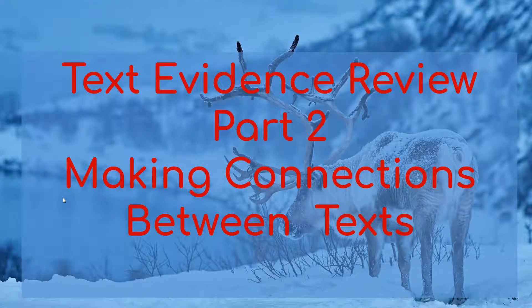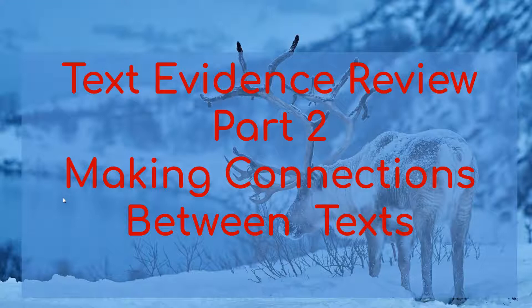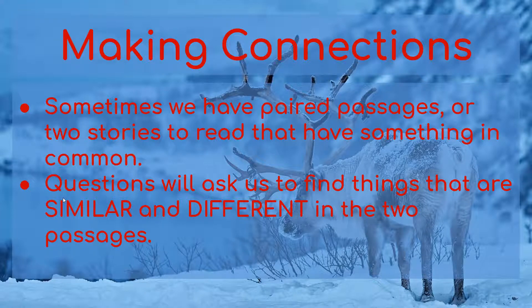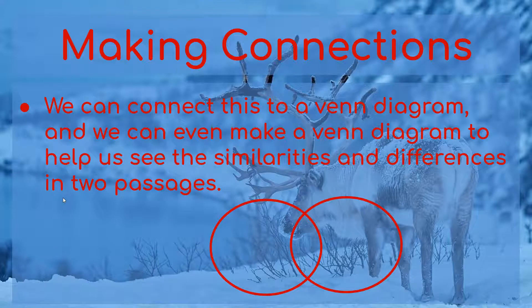Now we're going to move on to making connections between texts. This is where we read two texts — informational or fiction, whatever — two stories, and we look back in both texts to make connections and see what's similar and what is different between the two texts. Sometimes we have paired passages — two stories to read that have something in common. They might be about the exact same topic, or about different topics but somehow related. Questions will ask us to find things that are similar and different in the two passages. We can connect this to a Venn diagram and even make one in our notes to help us see the similarities and differences as we read.